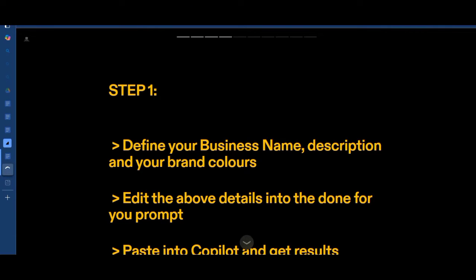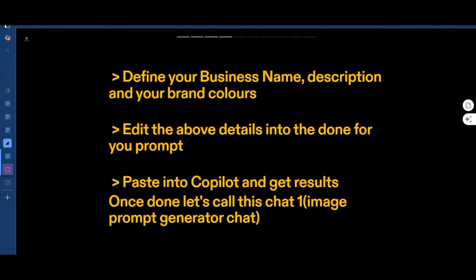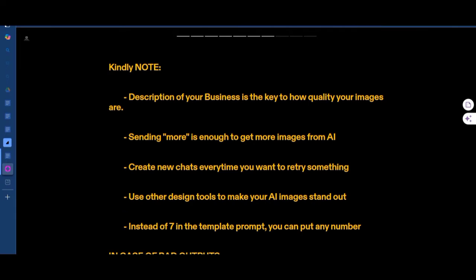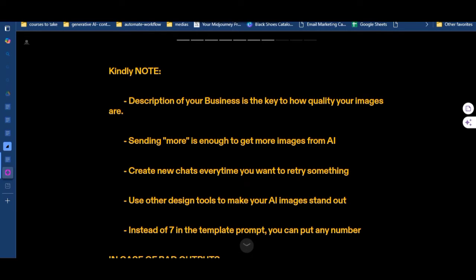Just a quick recap: step one — define your business name, description, and brand color somewhere, then put those into the done-for-you prompts you copy from the document file, then paste into Copilot and get results. Once you have results, identify the prompts AI gave you, create a new chat, and try each prompt until you get the ones you want. Now let's go into things that will affect how you use this system.